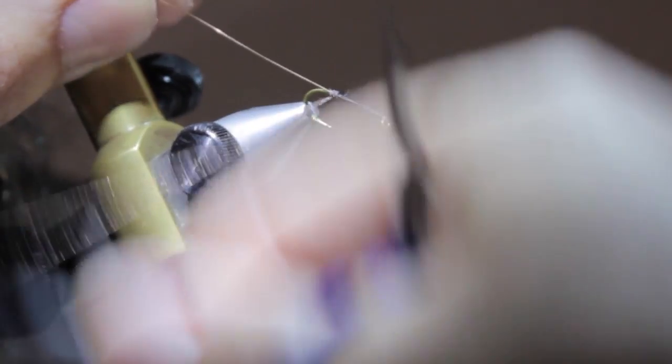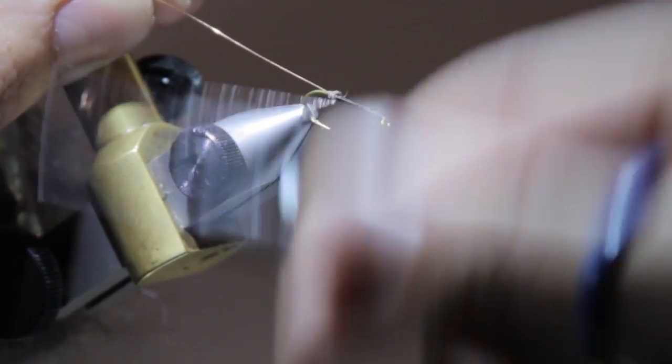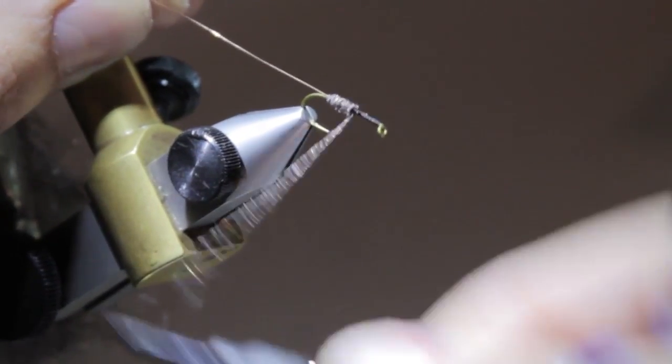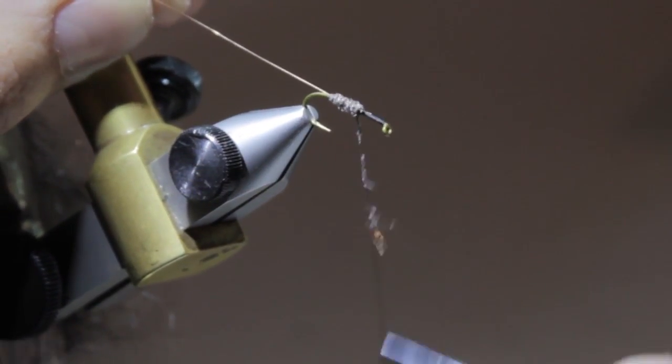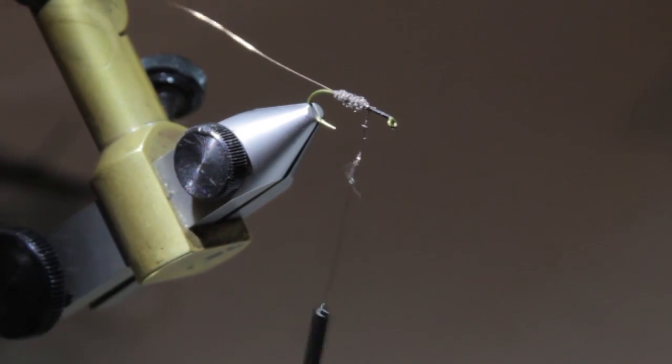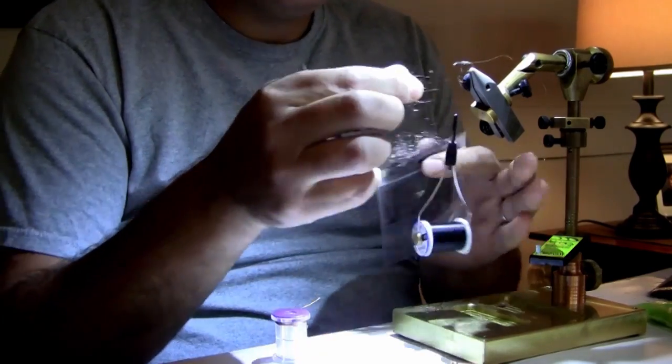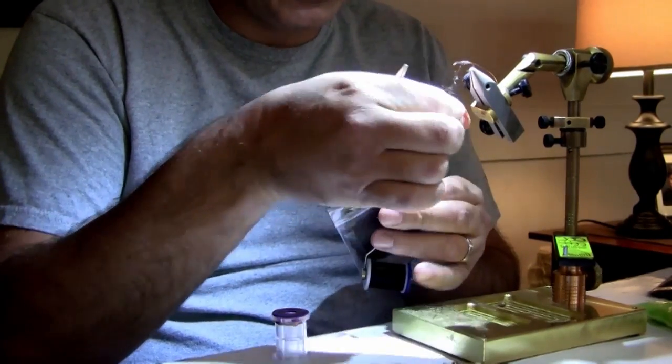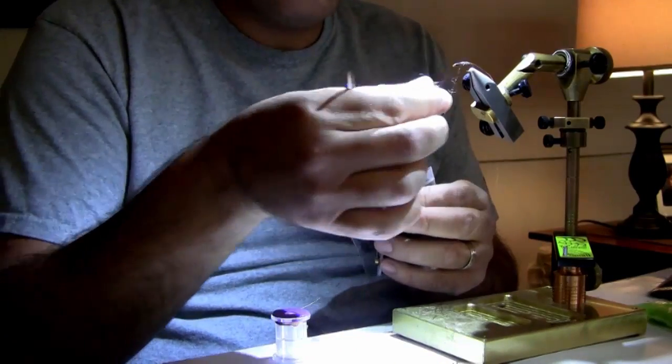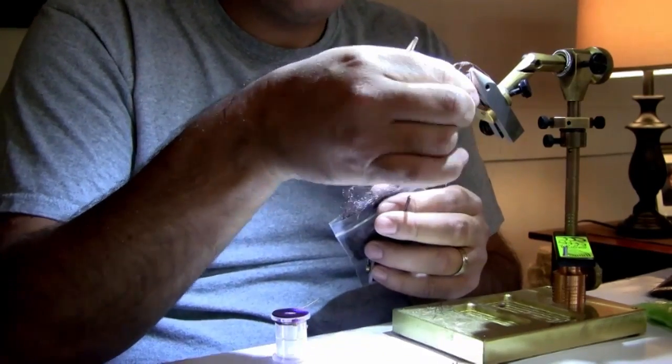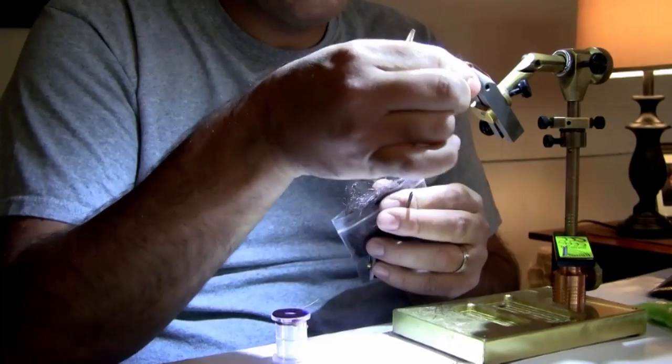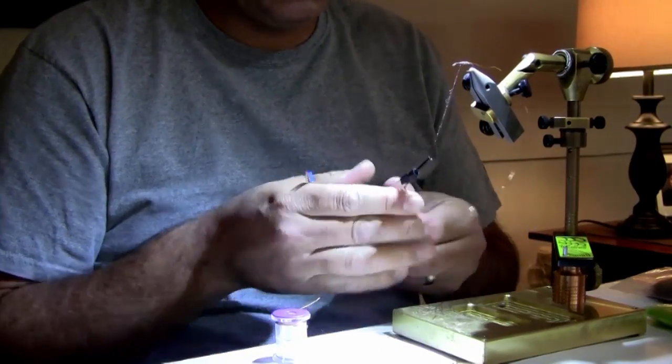As you work your way up the shank of the hook, we'll start back here. Trying to create a decent taper as we work our way forward to get that classic caddis abdomen. Just see how that stuff lays on there so smoothly.